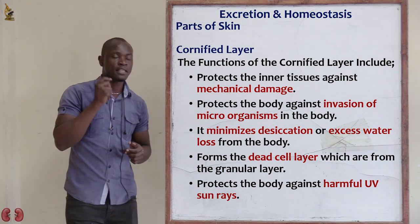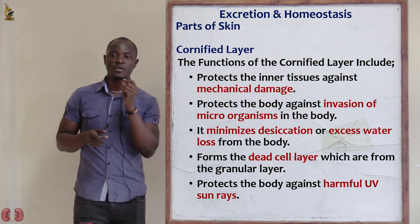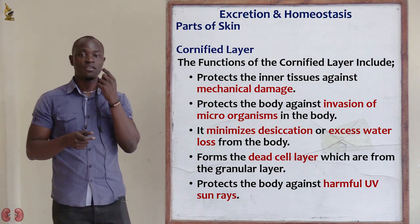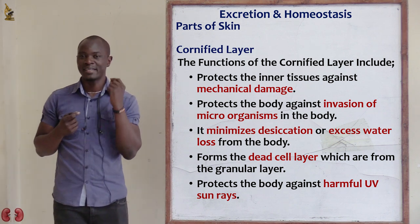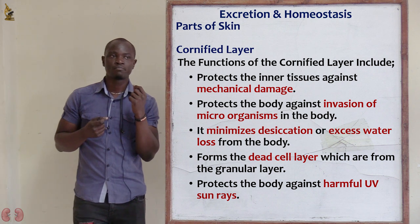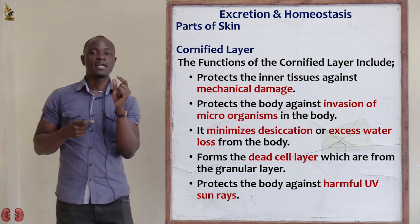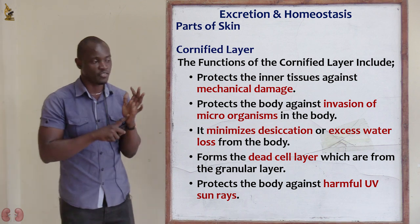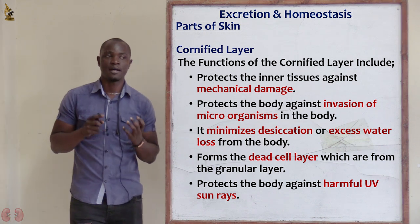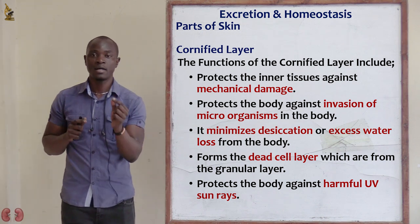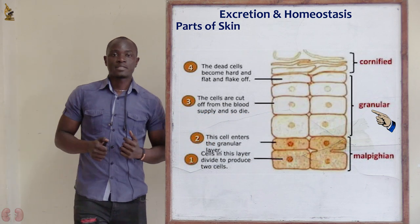In areas of less friction, the cornified layer is very thin. For example, the lips and the eyeballs, where there is less friction, have a very thin cornified layer. But areas of much friction like the palms of the hand and the soles of the feet have a very thick cornified layer.